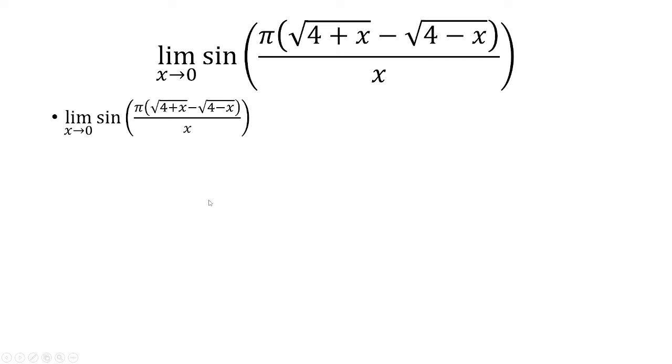So we're going to multiply the top and the bottom by the conjugate of square root of 4 plus x minus square root of 4 minus x, which the conjugate will just be that, but instead of addition.